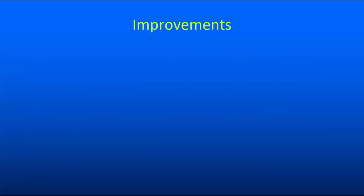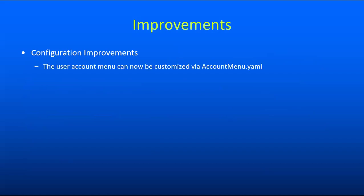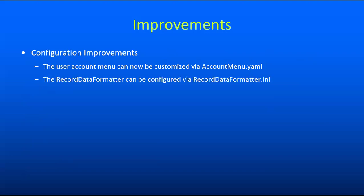In addition to all of those new features, we've also made a few improvements, many of which are new configuration settings offering previously unavailable customization. One big one is that the user account menu that appears when the user is logged in can now be customized through a new file called accountmenu.yaml — this can be used to add, remove, or reorganize the options in the menu. The record data formatter tool, which is used to format many of the online displays of record data, is now configurable through a file called record_data_formatter.ini.